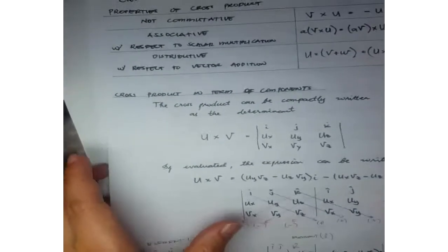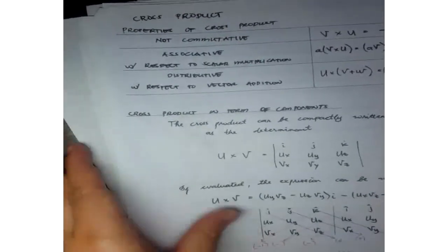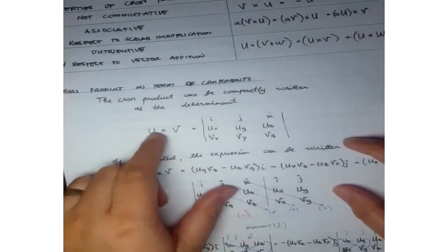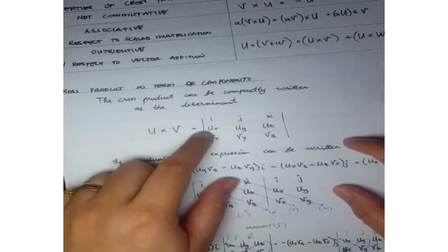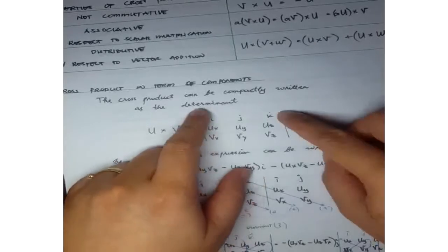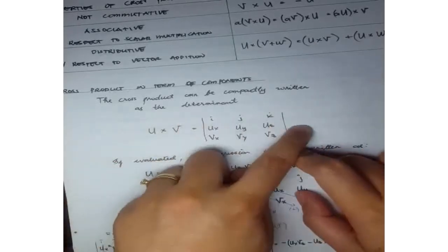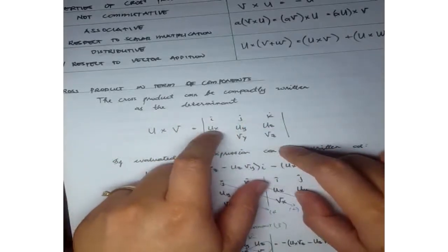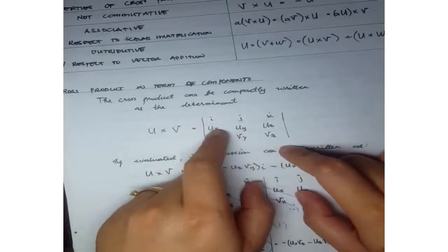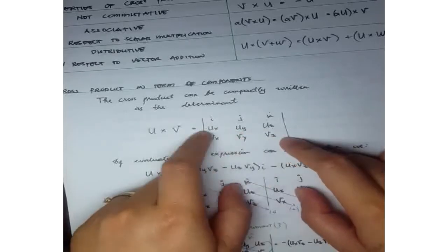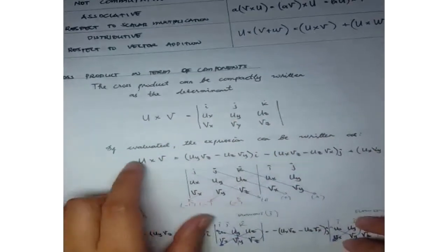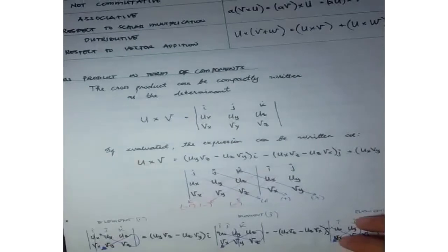For vector U cross V, we can write this as a determinant with the I, J, K directions in the first row, the components Ux, Uy, Uz in the second row, and the components Vx, Vy, Vz in the third row.